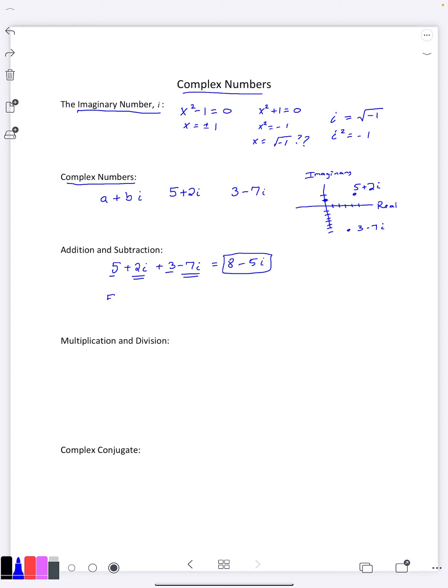Similarly we can subtract the two complex numbers. Now I do want to be careful here because I want to say I'm subtracting the whole complex number. That's why I have parentheses there. And then because of that we're going to have to distribute that negative sign in. And so again like terms, 5 - 3 is 2. And 2i minus a negative 7i is going to be plus a 9i here. So we can add them, we can subtract them.